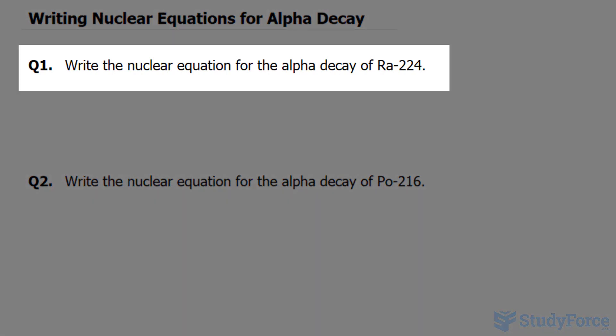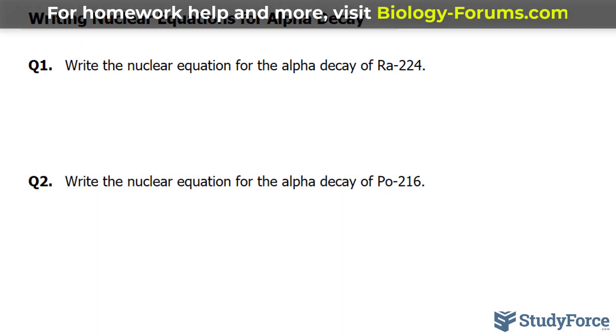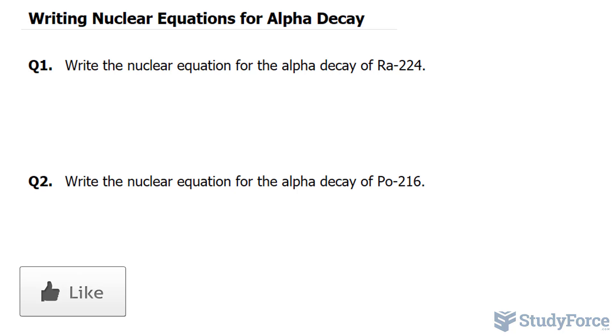Question one reads, write the nuclear equation for the alpha decay of radium-224. The first thing you want to do is write down the symbol for radium-224 on the left side of the equation, and the symbol for an alpha particle, which is technically helium, on the right side of the equation.